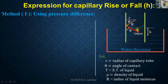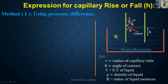The pressure difference due to the concavity of the liquid meniscus is the excess pressure inside the liquid drop. There is a pressure difference between the point inside the capillary at the liquid meniscus and the point outside the capillary at the liquid surface.